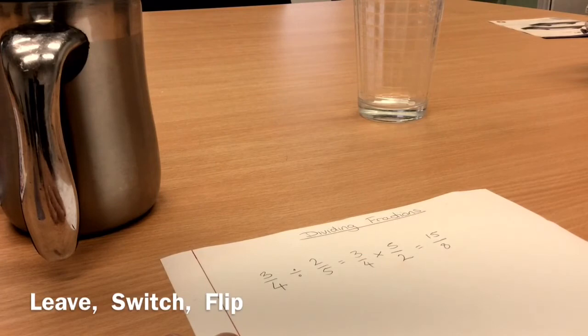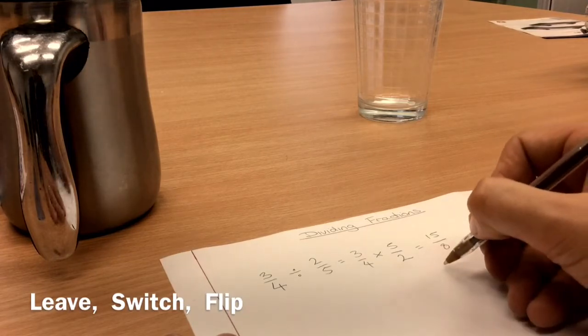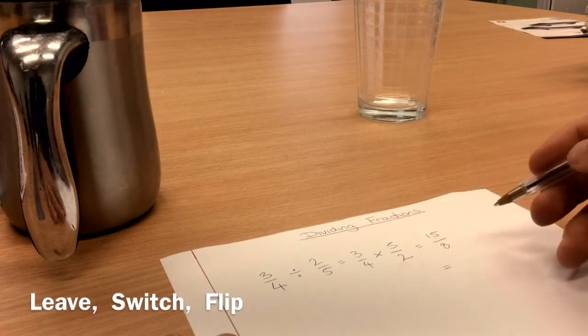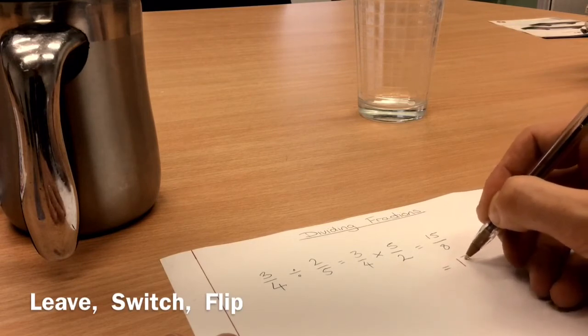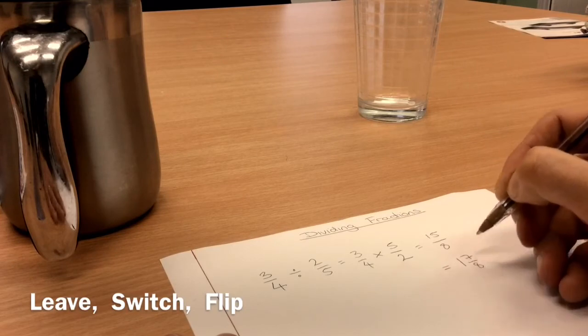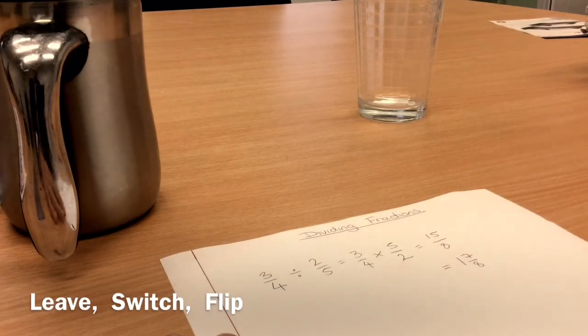Now, fifteen divided by eight, fifteen over eight is a good answer. But if you remember how, we're going to write it as a mixed number. How many eights can I fit into fifteen? Well, I can get one whole one with seven remaining. One and seven eighths.